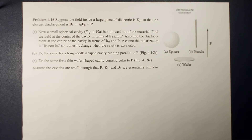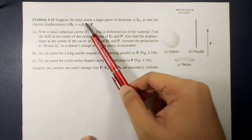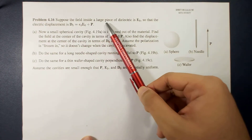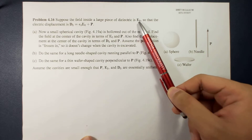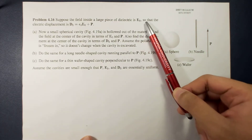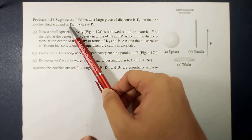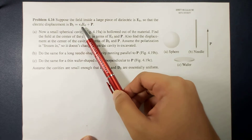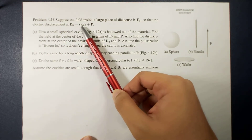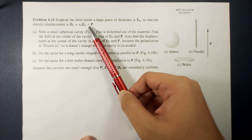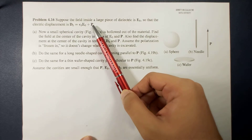Hi guys, this is Sir Ernest and today we will work on a sample problem involving electric displacement. The problem reads: suppose the field inside a large piece of dielectric is E0, so that the electric displacement is D0, which equals epsilon_0 times E0 plus P, where P is your polarization.